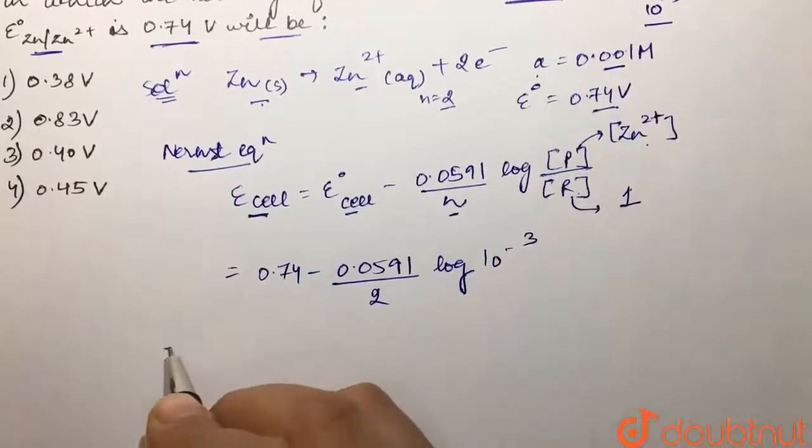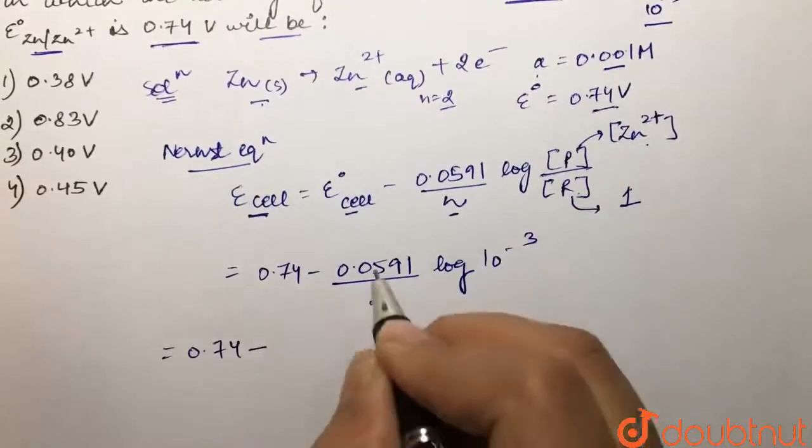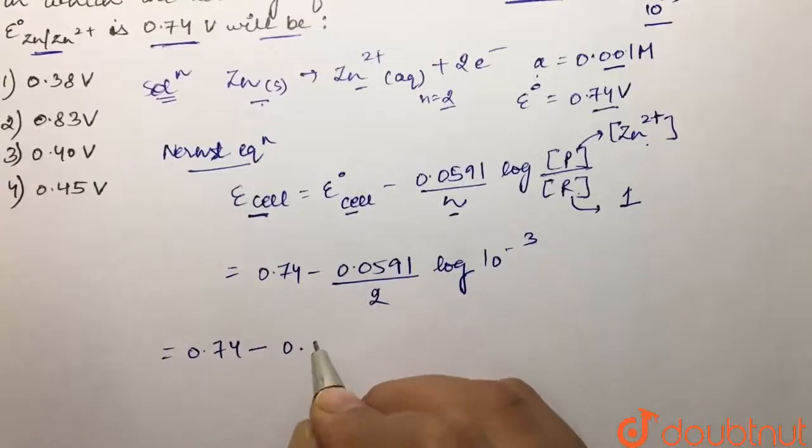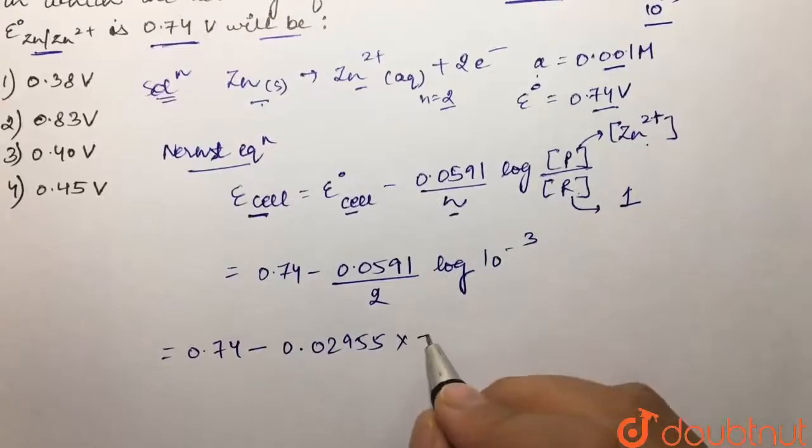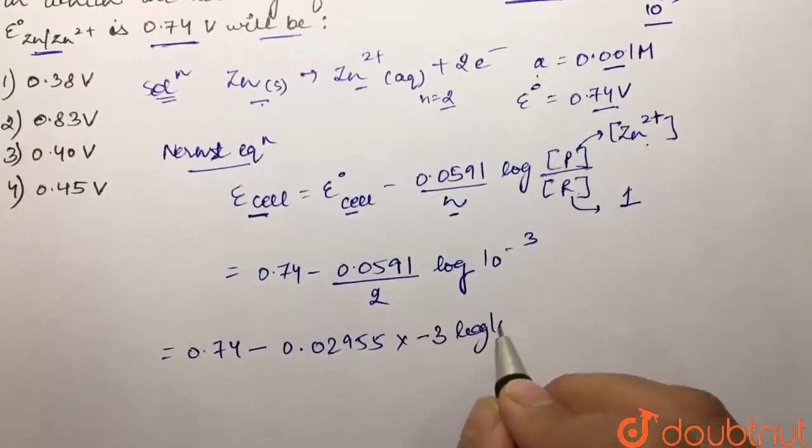So this would be equal to 0.74 minus this is gonna be 0.02955, right? And then multiply by minus 3 is gonna come forward. Minus 3 log 10. Log 10 is 1.